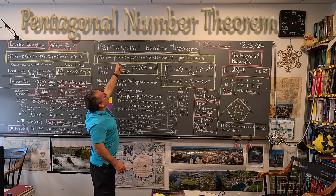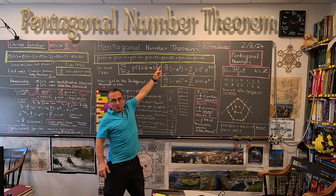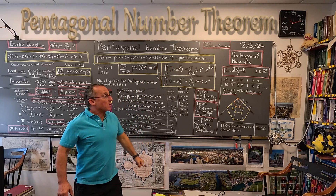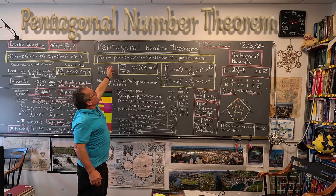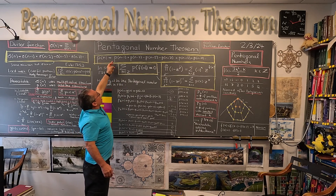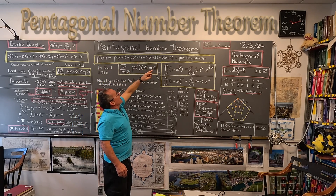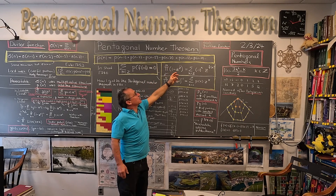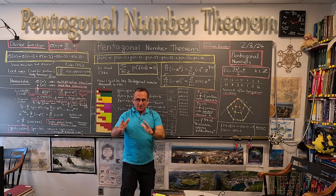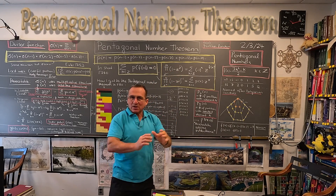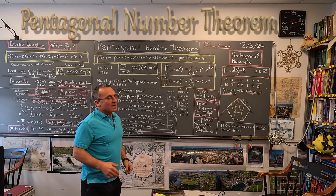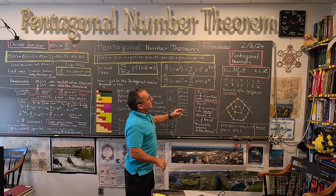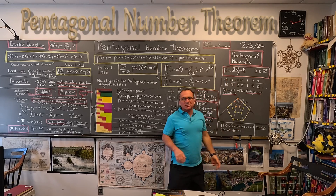So if you know the partition number for smaller N, you can get it like that. P(N) equals P(N-1) plus P(N-2) minus P(N-5) minus P(N-7). There is always a plus-plus-minus-minus-plus-plus pattern. And what is hidden there are the pentagonal numbers.